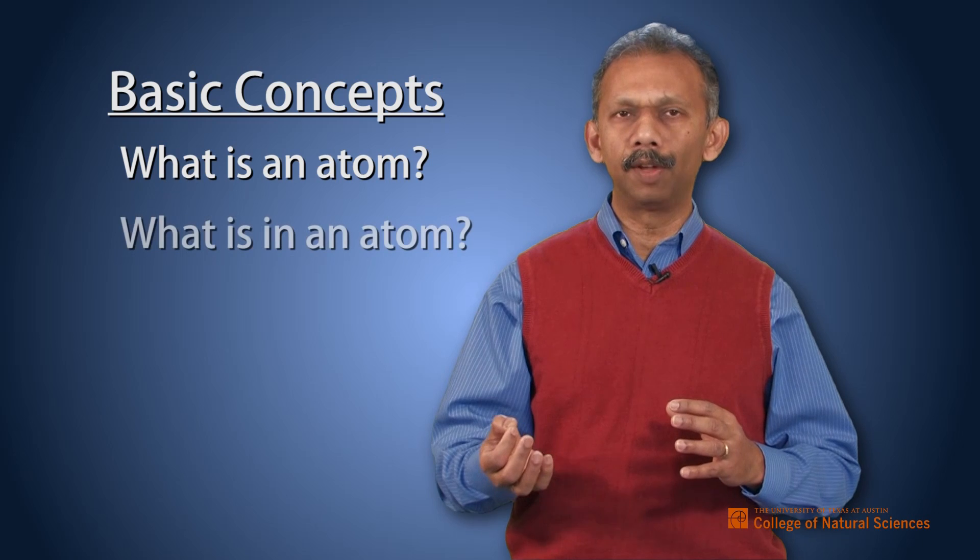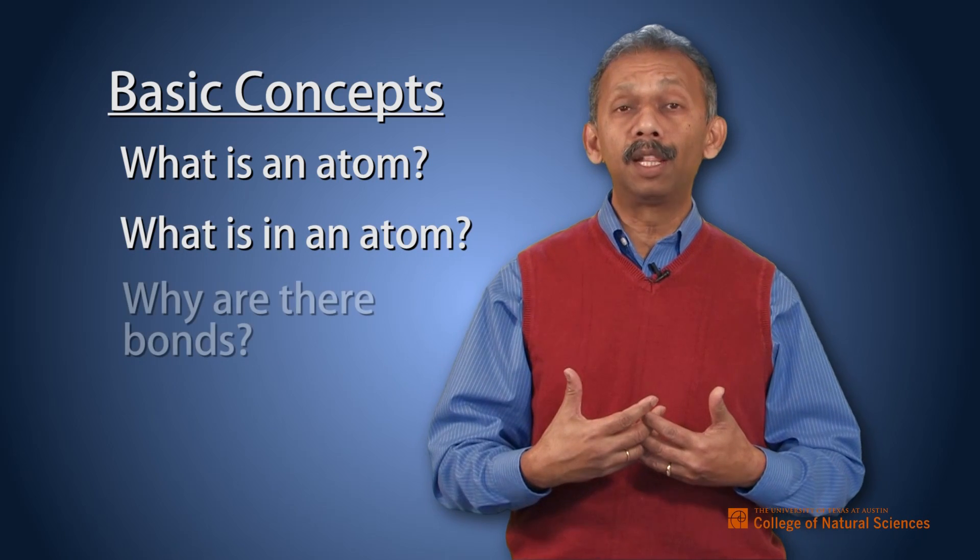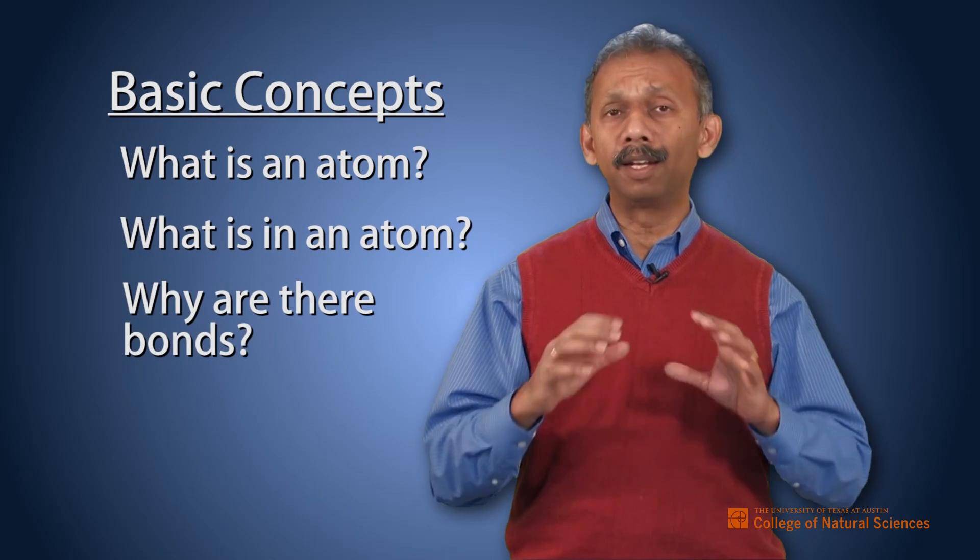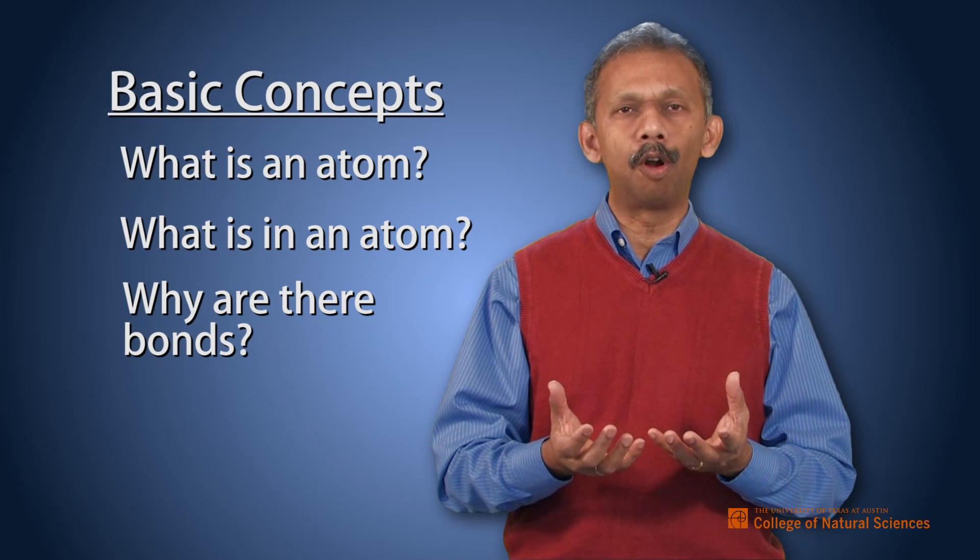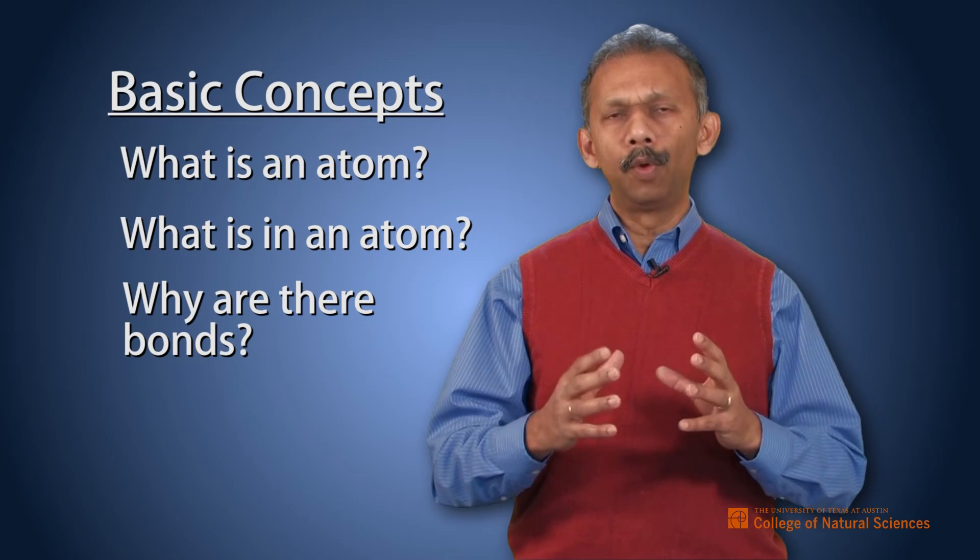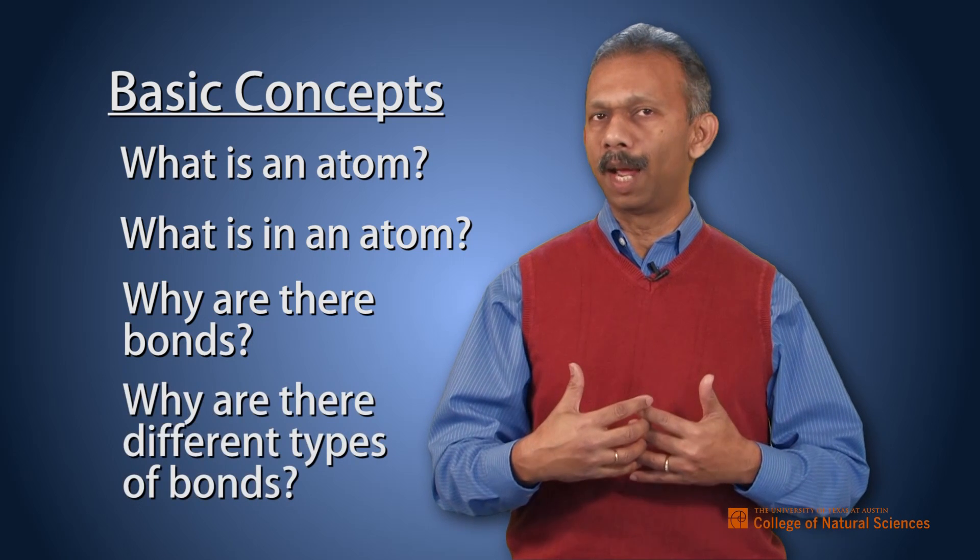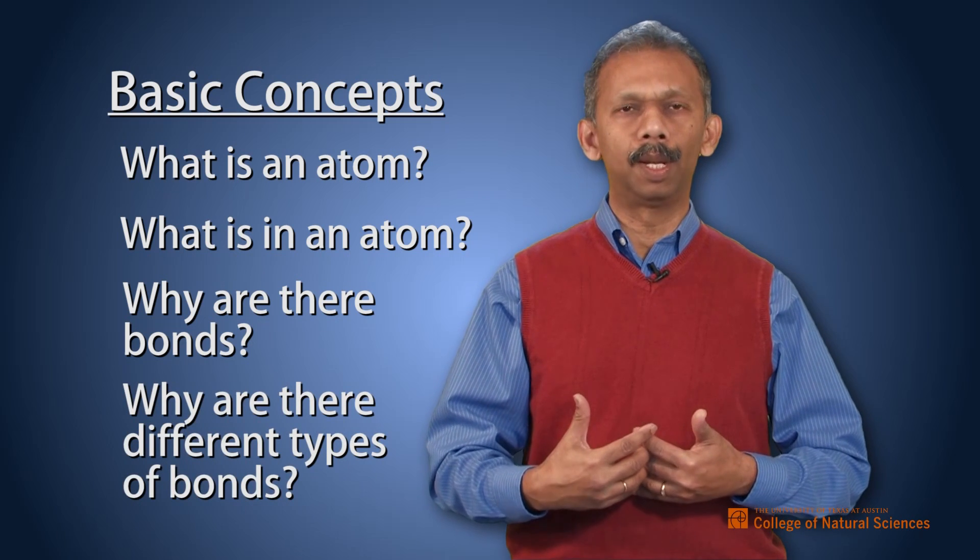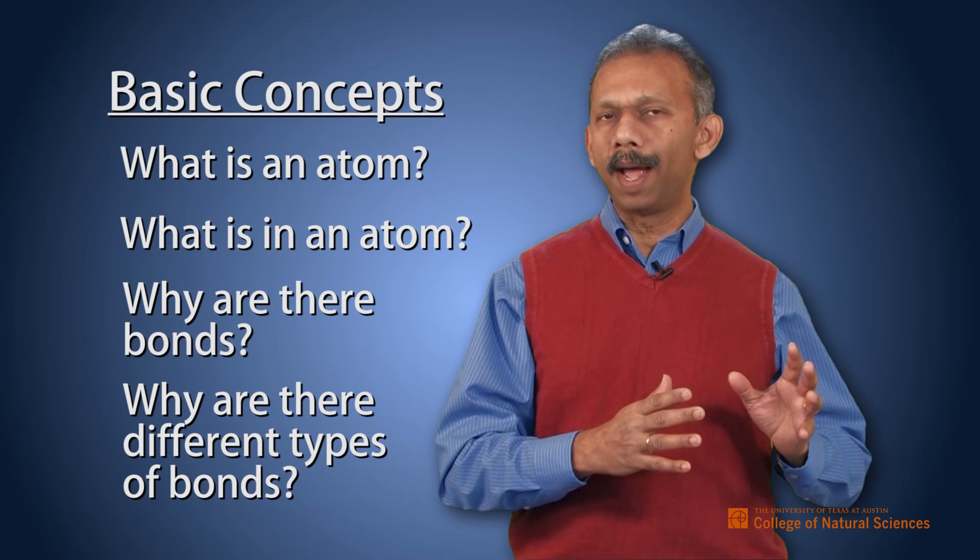Once you understand that basic concept of what an atom is, and what are the components of the atom, and then why they make the bonds to maintain that full valence orbit that is the outermost shell of the atom, you will understand why they make different types of bonds to keep the stability.